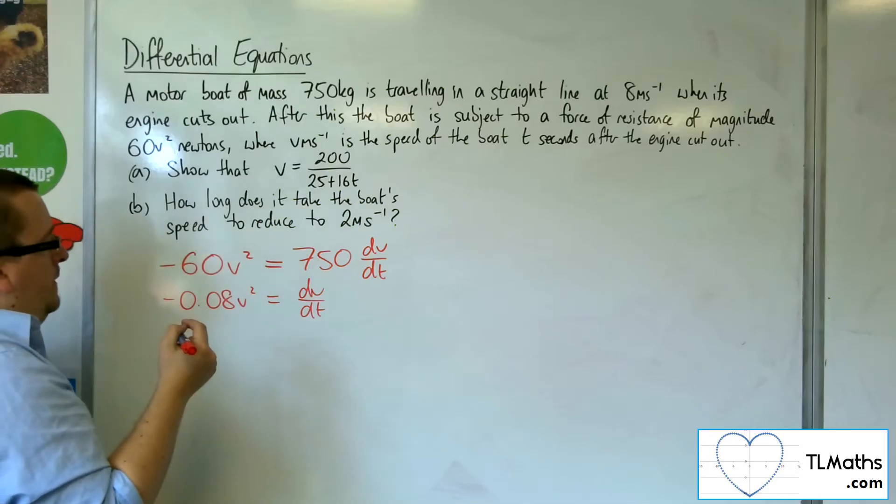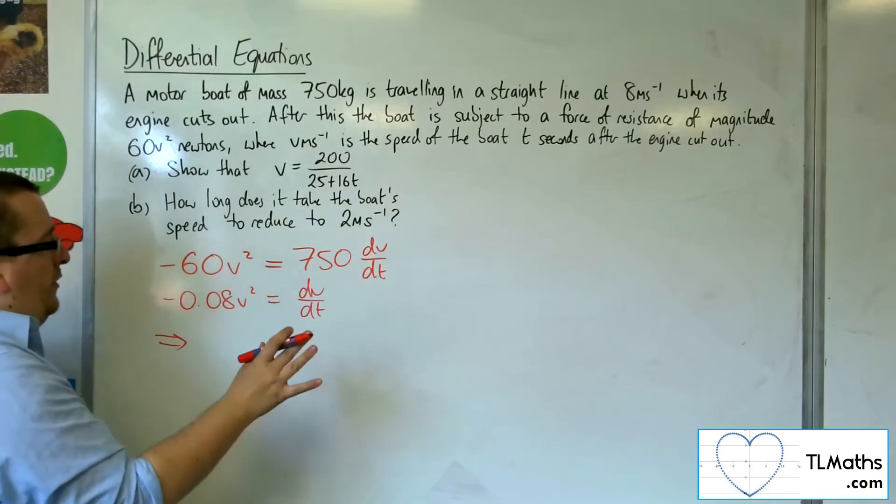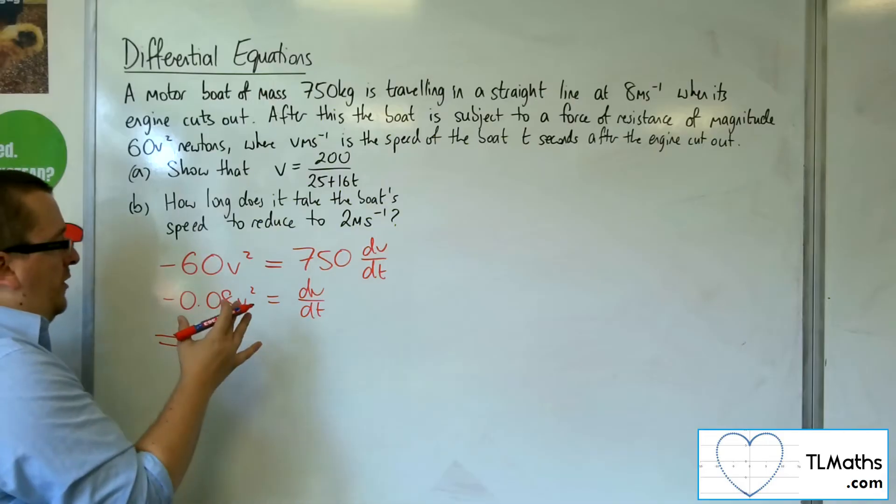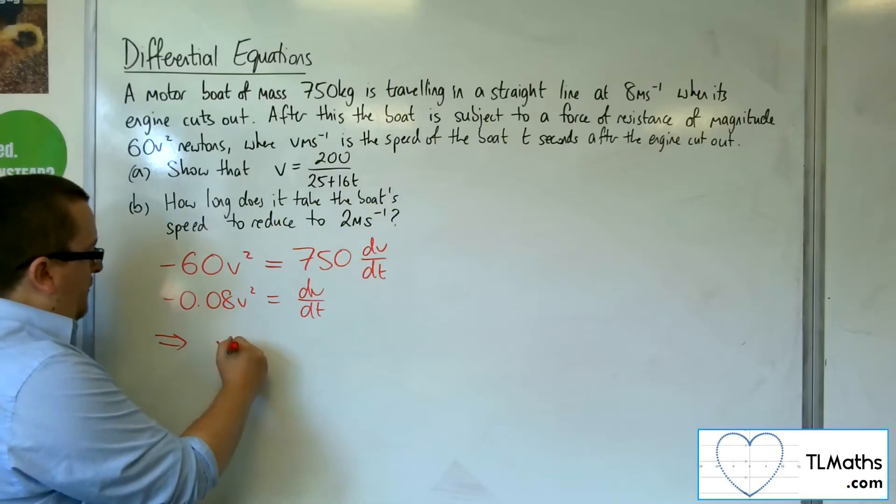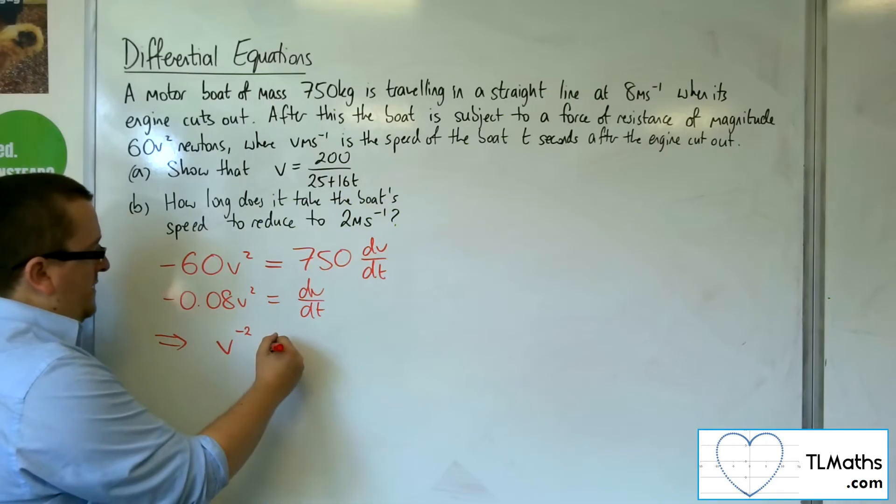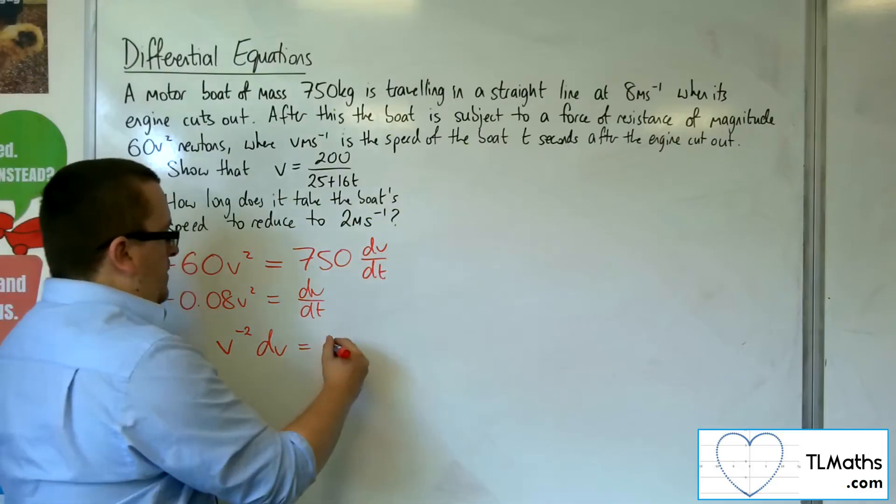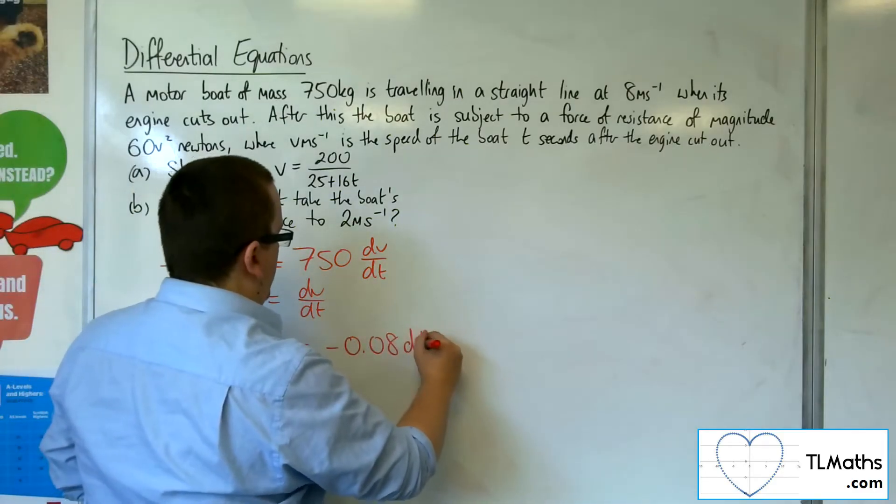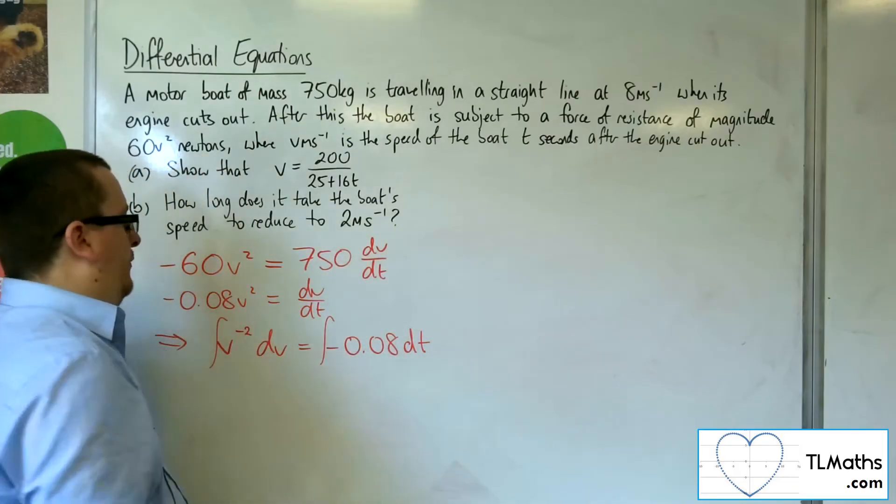So if I rearrange this, I'm going to divide both sides by the V squared, multiply both sides by the DT. So we're going to have V to the minus 2 DV is equal to minus 0.08 DT. And I'm going to integrate both sides.